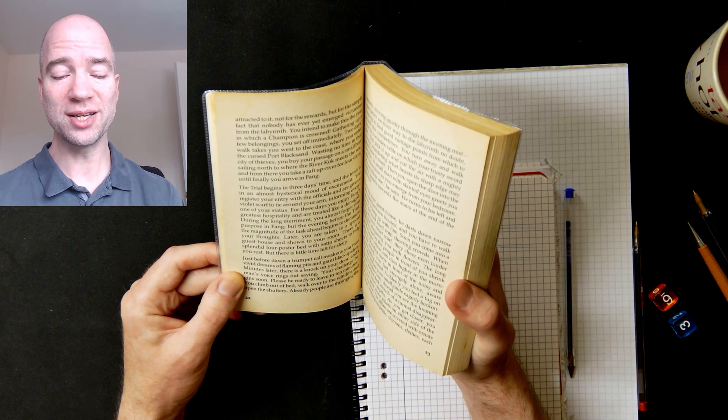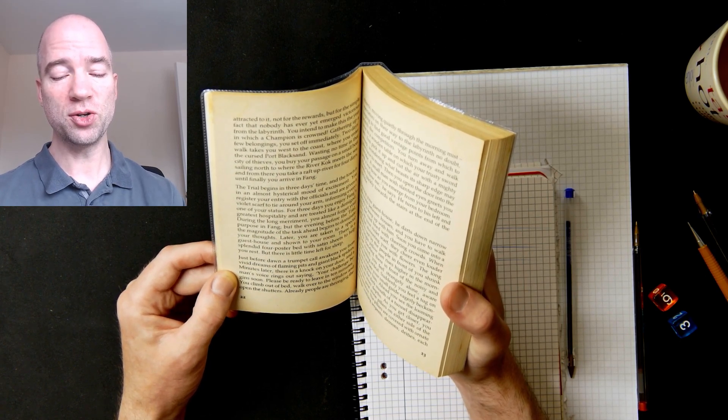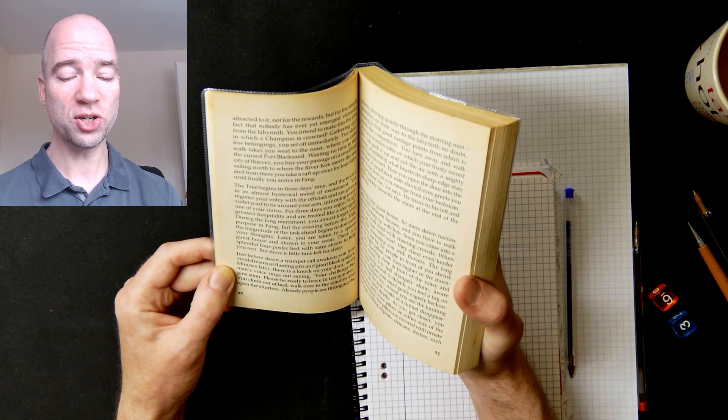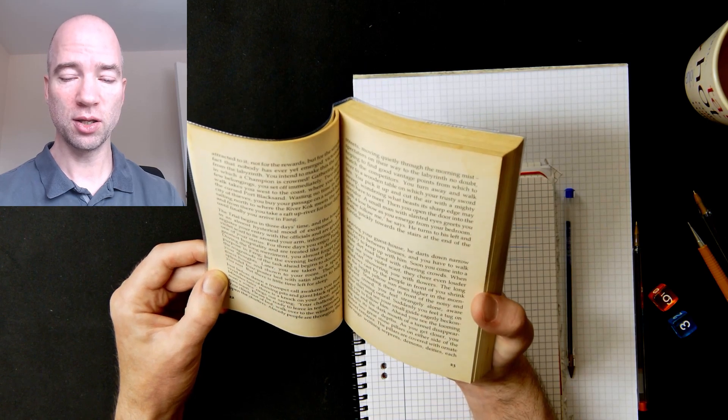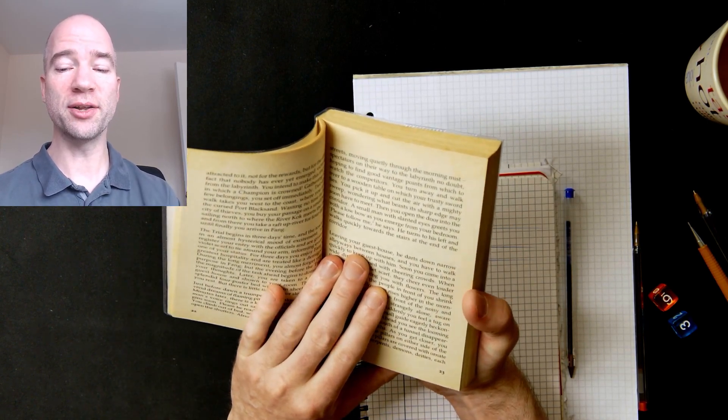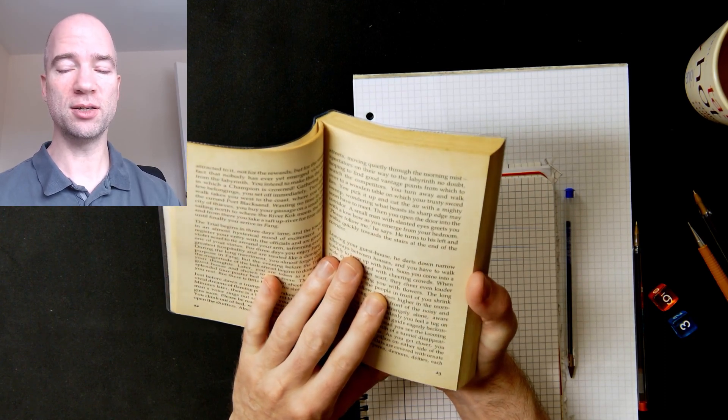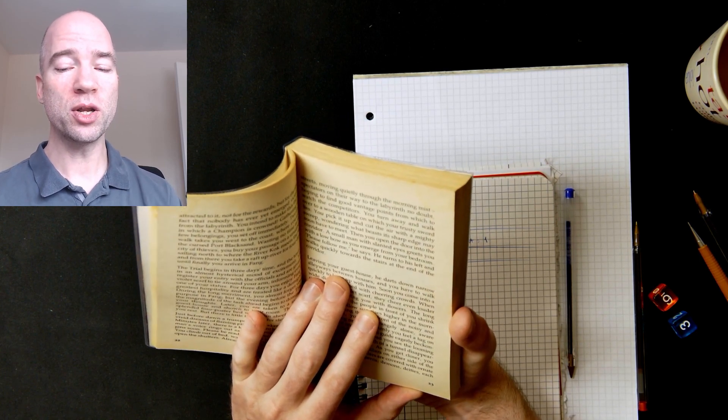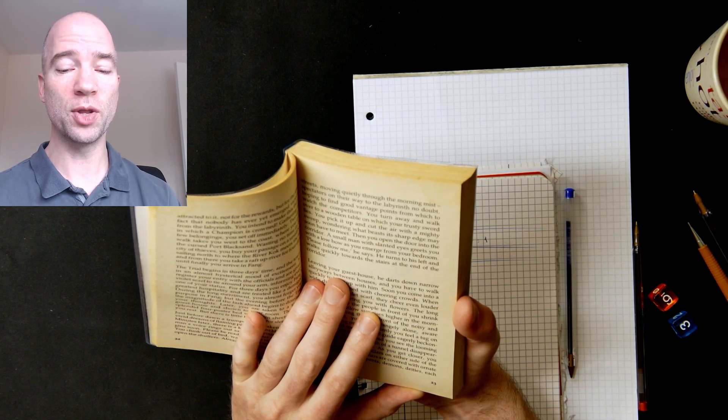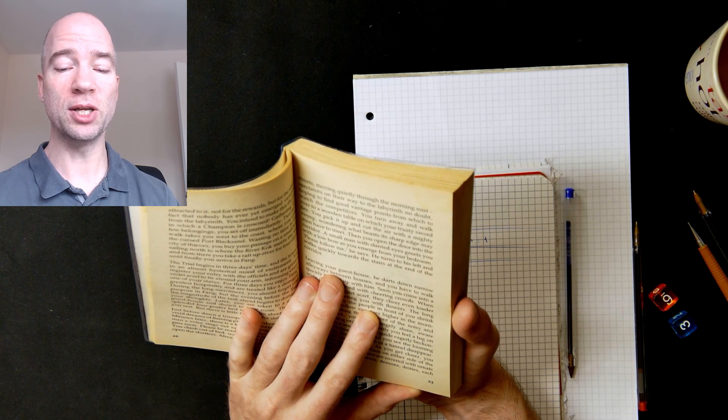Just before dawn, a trumpet call awakens you from vivid dreams of flaming pits and giant black spiders. Minutes later there is a knock on your door and a man's voice rings out saying: your challenge begins soon, please be ready to leave in ten minutes. You climb out of bed, walk over to the window and open the shutters. Already people are thronging the streets, moving quietly through the morning mist. Spectators on their way to the labyrinth, no doubt, hoping to find good vantage points from which to watch the competitors. You turn away and walk over to a wooden table on which your trusty sword lies. You pick it up and cut the air with a mighty sweep, wondering what beasts its sharp edge may soon have to meet.